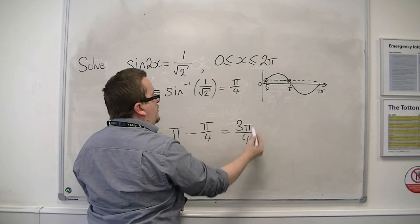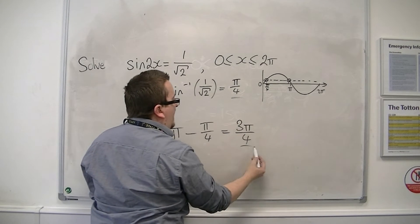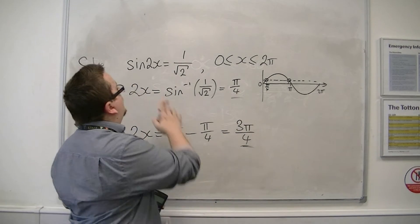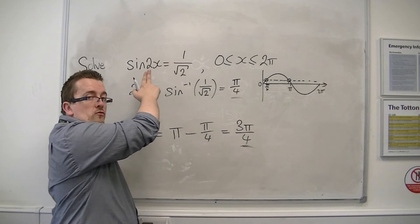So pi take away pi over 4 is 3 pi over 4. So these would be the two solutions that I would have if I was solving sin of x equals 1 over root 2.